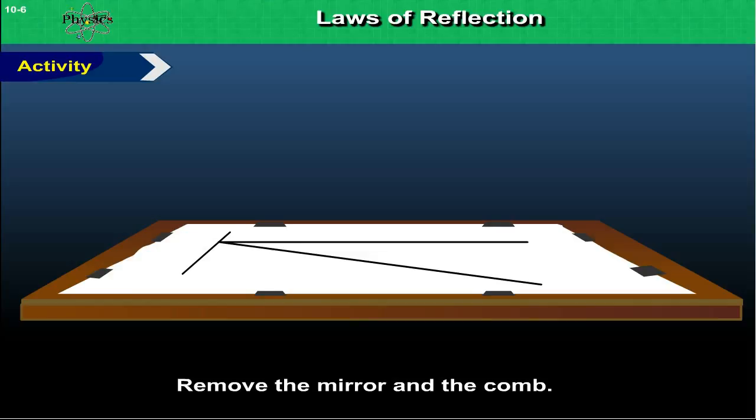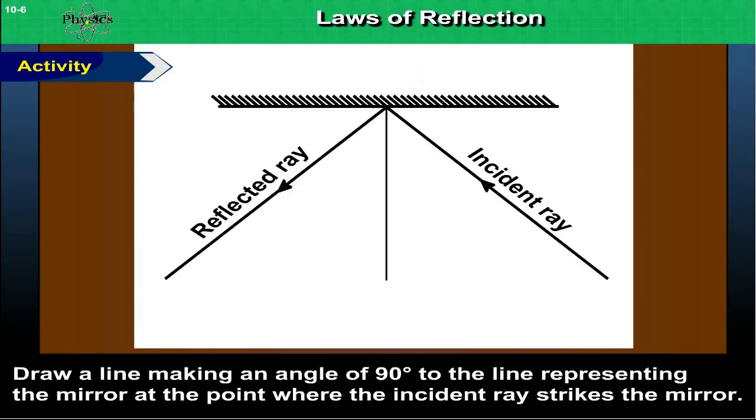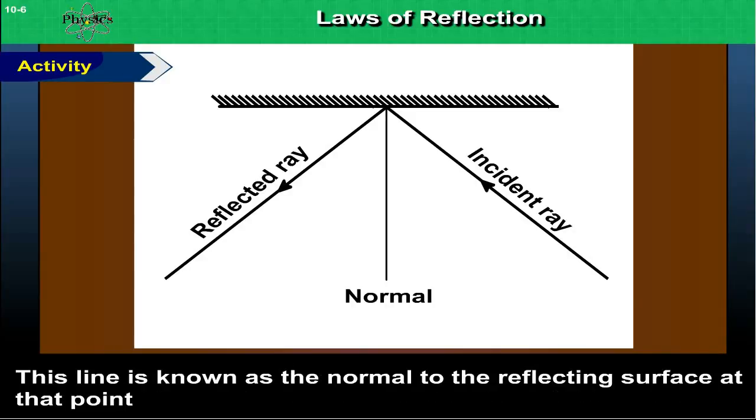Draw a line making an angle of 90 degrees to the line representing the mirror at the point where the incident ray strikes the mirror. This line is known as the normal to the reflecting surface at that point.